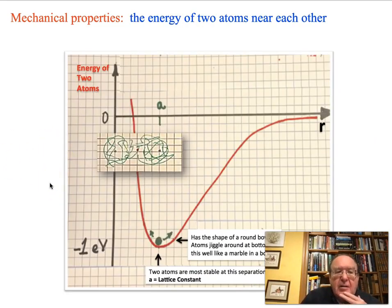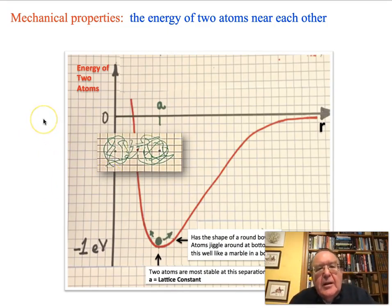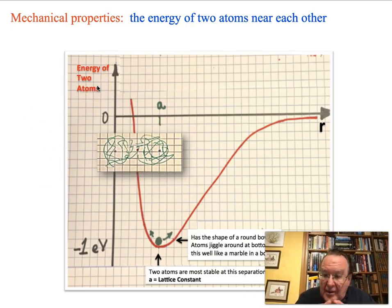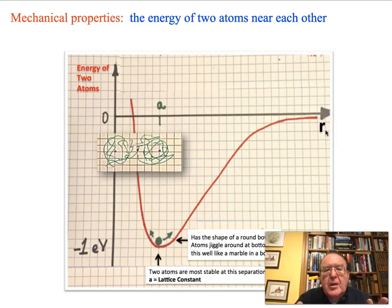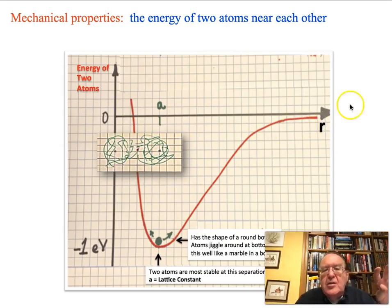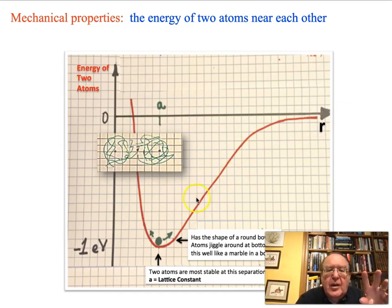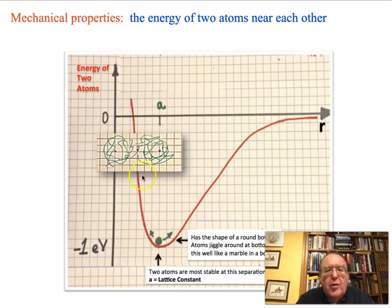This is a plot of the energy of two atoms as a function of how far apart they are. The vertical axis is the energy of the two atoms — the lower the energy, the more stable they are. The horizontal axis R is the separation between the two atoms. If you take the two atoms and separate them by a lot, the energy is zero. As you bring them closer and closer together, the energy goes down through a minimum — when they're just the right distance apart, they're most stable. In order to push them closer together, you have to put more energy in. The stable position is right down at the bottom, labeled A — the lattice constant.